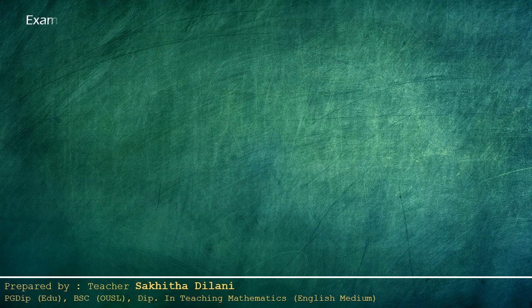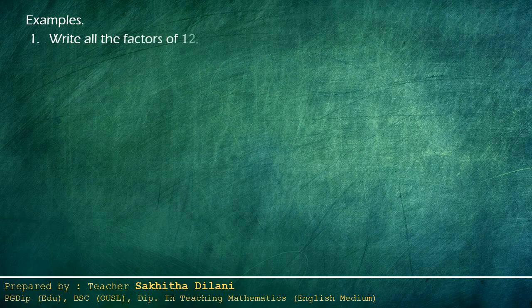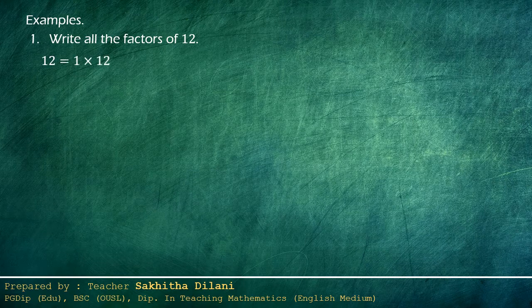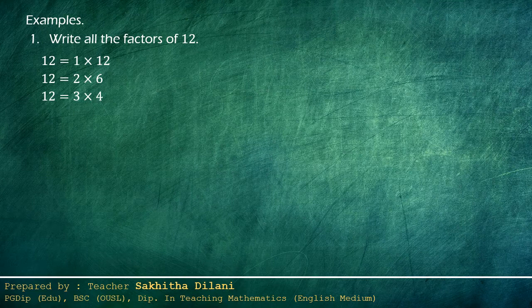Now let's see some examples. First: write all the factors of twelve. First, write twelve as a product of two whole numbers in different ways: twelve equals one times twelve, twelve equals two times six, and twelve equals three times four. So we can list out all the factors of twelve: one, two, three, four, six, and twelve.